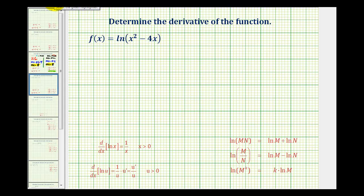So again, we have a composite function. So u is going to be equal to x squared minus 4x. So du dx, or u prime, is going to be 2x minus 4.